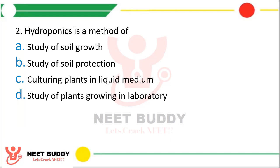Question 2: Hydroponics is a method of? Option A, study of soil growth. Option B, study of soil protection. Option C, culturing plants in liquid media. Option D, study of plant growing in laboratories. The correct answer is Option C — it is the method of culturing plants in liquid medium.